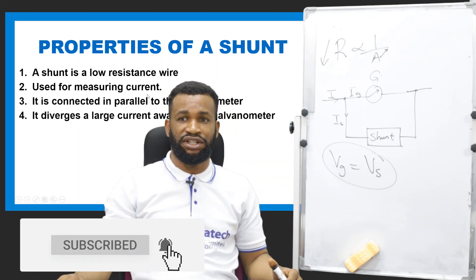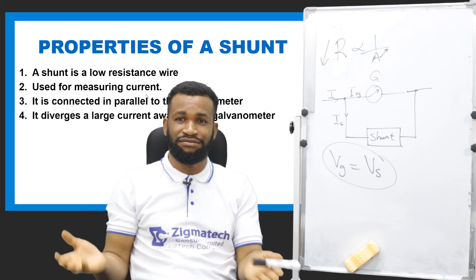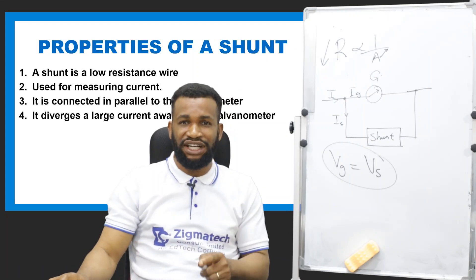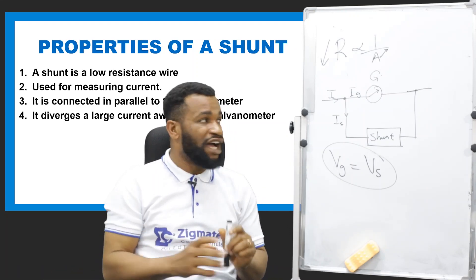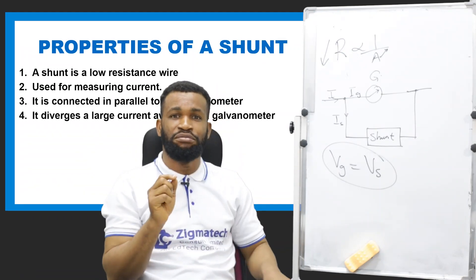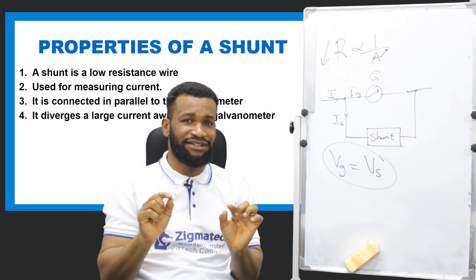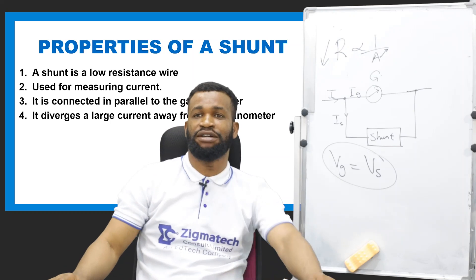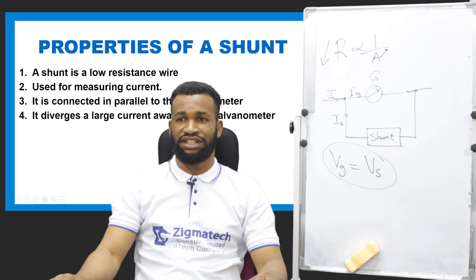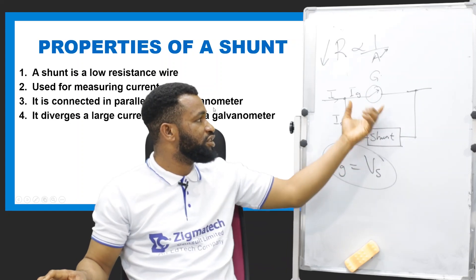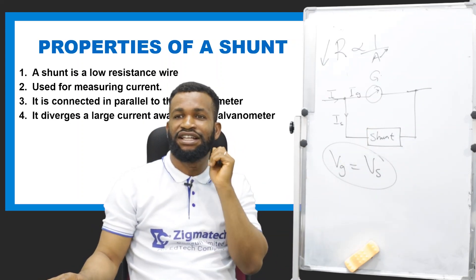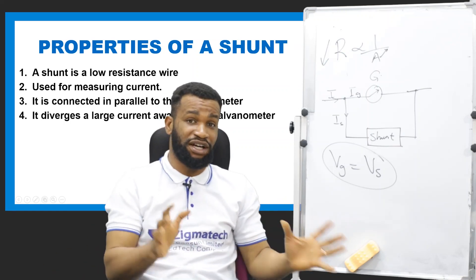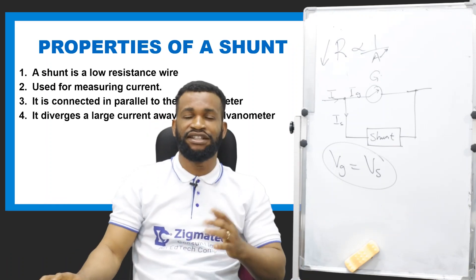The shunt is used for measuring current. Before you use the meter, you have to ensure that it is connected to the current to measure current, and you do that by connecting your meter in series with the circuit — not like a voltmeter where you connect across. The shunt is connected in parallel to the galvanometer, and it diverts a large current away from the galvanometer to avoid damage to the system.